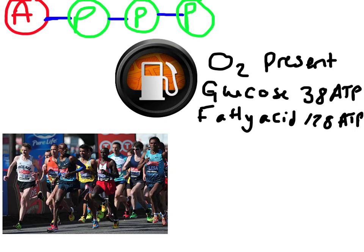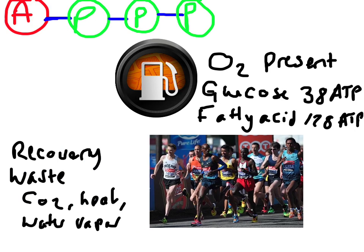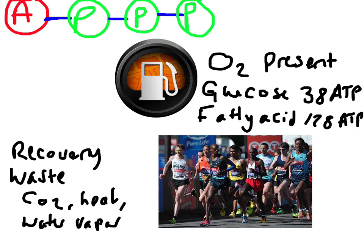Here we've got Mo Farah as an example — this type of activity is suitable for the aerobic system. While he's working this system, he's producing some waste products: carbon dioxide, heat, and water vapour throughout the process.